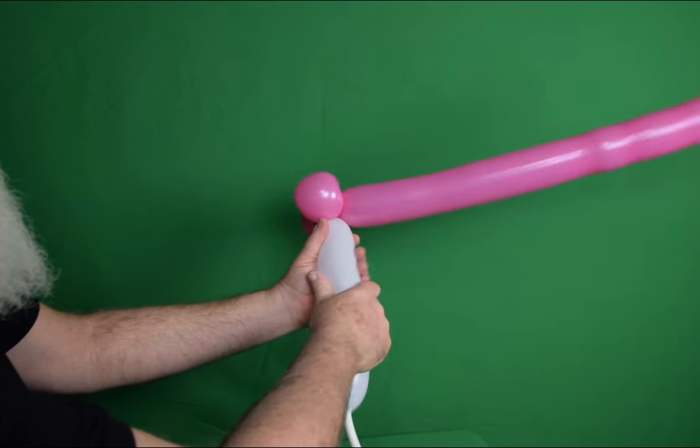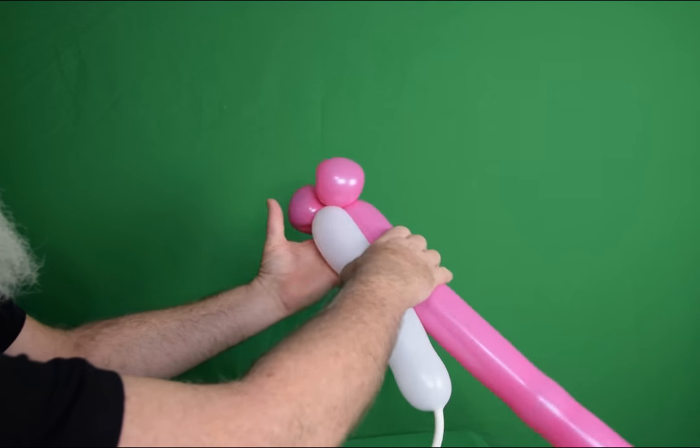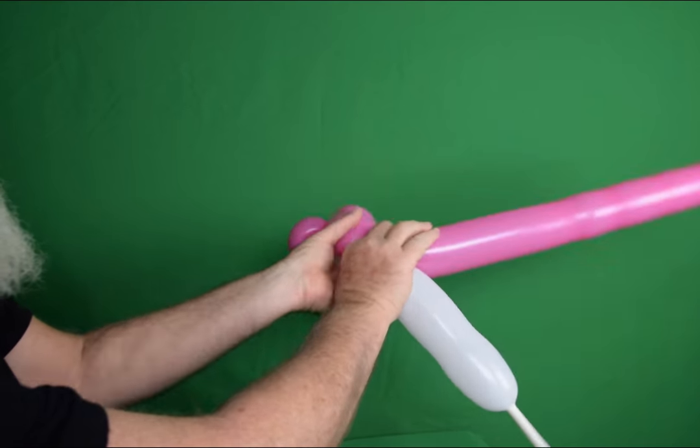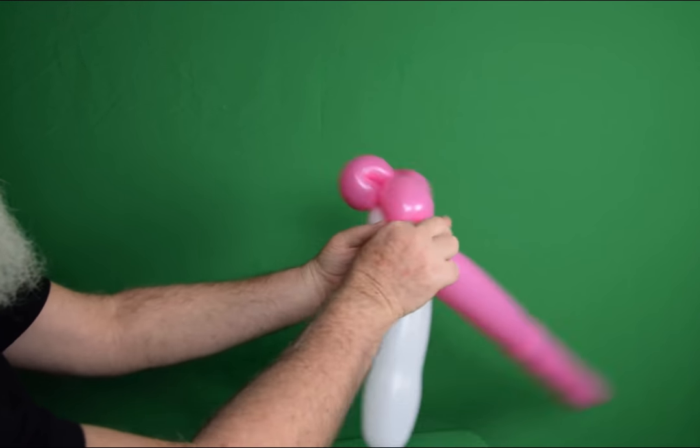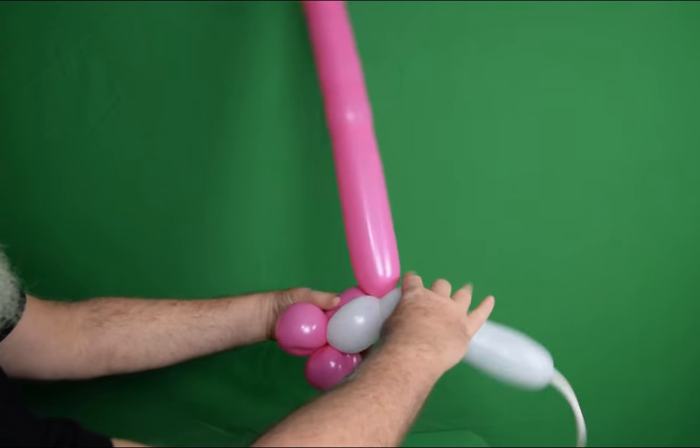Now we're going to squeeze your 360s, keep them soft. We're going to move out a four finger bubble in each one by twisting the two of them together.